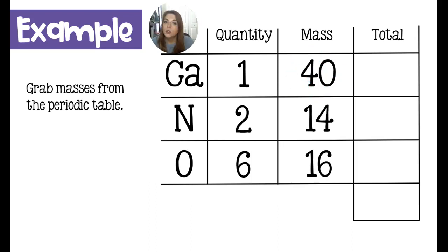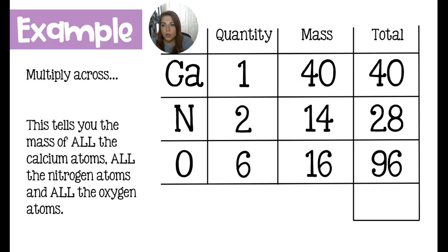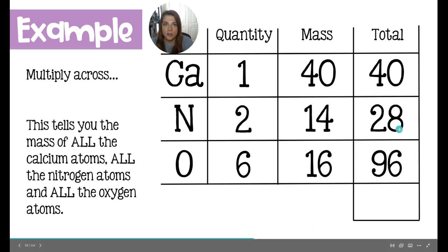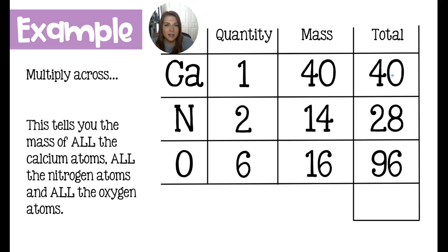If you did this using significant figures, calcium should be 40.08, or it might be 40.1 on your periodic table. You're going to match the total to the number of significant figures in the mass because we're multiplying. Multiply going straight across: 40 grams belongs to calcium, 28 to nitrogen, and 96 to oxygen. This is the total of all oxygens, nitrogens, and calciums inside this compound.